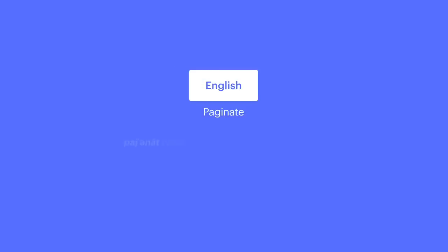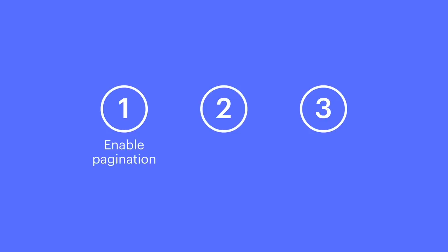Paginate — three syllables that describe the act of dividing stuff over multiple pages. We'll cover enabling basic pagination, we'll cover the updated anatomy of the collection list wrapper, and we'll talk about how we can directly link to a specific page via the pagination URL.